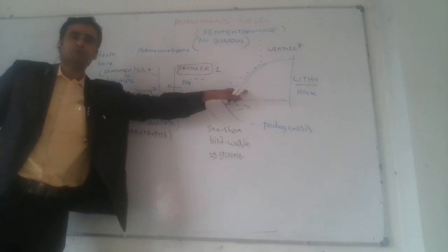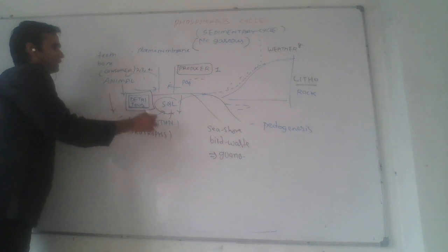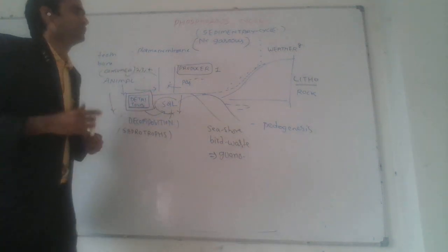Rocks are the source of phosphorus. From plants, animals, and soil, it circulates again and again. This is the phosphorus cycle.